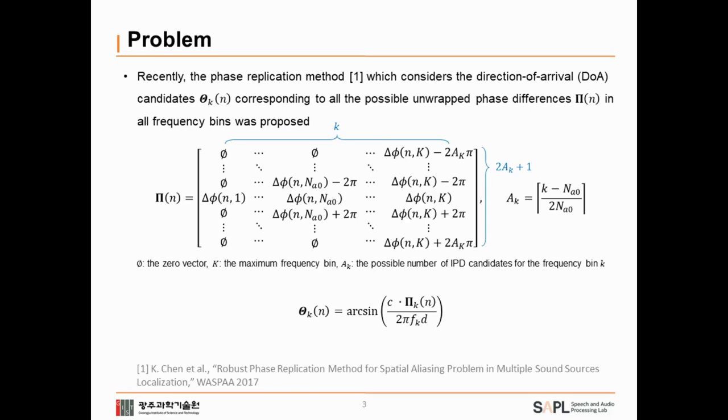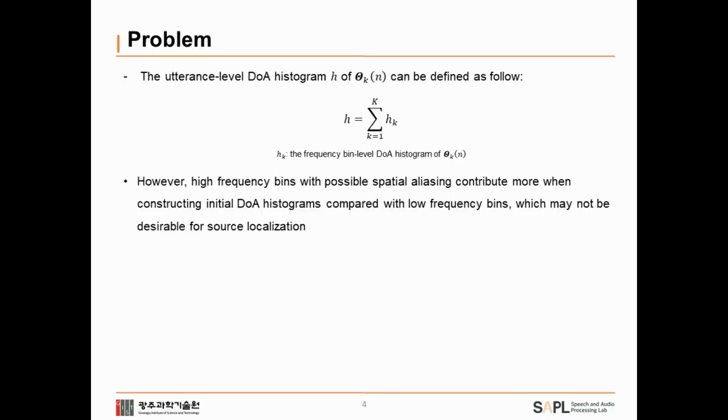phase replication method was proposed to address spatial aliasing issue. This method considered DOA candidates corresponding to all the possible unwrapped phase differences in all frequency bins. The utterance-level DOA histogram H is constructed as follows.